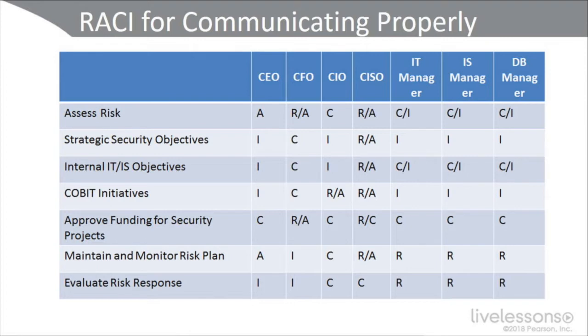C is Consulted — anyone who must be consulted prior to a decision being made or a task being completed. There can be as many C's as appropriate in each row. I is Informed — anyone who must be informed when a decision is made or work is completed. There can be as many I's as appropriate. Use the RACI chart to help translate security information and risk into business needs, communicating properly and efficiently to the right target audience.